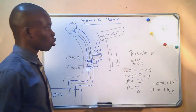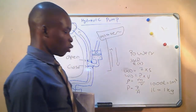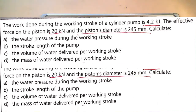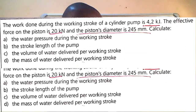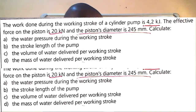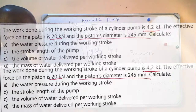We will do an example from the textbook to see how we go about solving questions involving a hydraulic pump. The question reads as follows: the work done during the working stroke of a cylinder pump is 4.2 kilojoules, the effective force on the piston is 20 kilonewtons, and the piston diameter is 245 millimetres. Calculate: (a) the water pressure during the working stroke, (b) the stroke length of the pump, (c) the volume of water delivered per working stroke, and (d) the mass of the water delivered per working stroke.